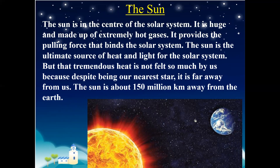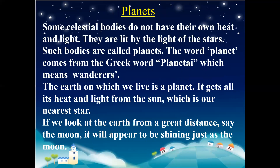The sun is the ultimate source of heat and light for the solar system, but that tremendous heat is not felt so much by us because, even though it is very near to us, it is still 150 million kilometers away from the Earth. There are some celestial bodies which do not have their own heat and light — they are lit by the light of stars. These celestial bodies are called planets. The word planet comes from the Greek word 'planetai', which means wanderers. The Earth on which we live is also a planet, and it gets all its heat and light from the sun, which is our nearest star.